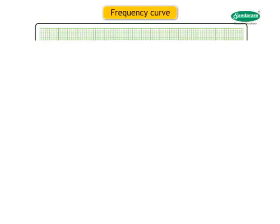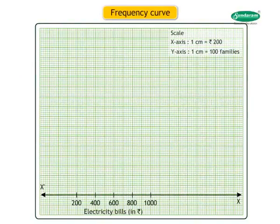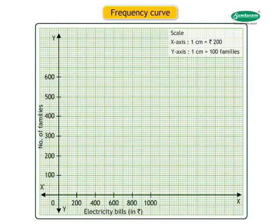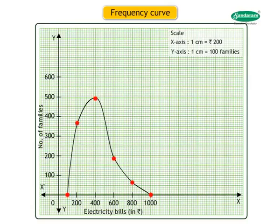The respective class marks are 300, 500, 700, and 900, with corresponding frequencies 362, 490, 185, and 63. Draw the x-axis with scale 1 cm equal to ₹200 and the y-axis with 1 cm equal to 200 families. Plot class marks on the x-axis, frequencies on the y-axis, add two additional classes with frequency 0, and join all successive points including the extreme points by a smooth curve to get the desired frequency curve.